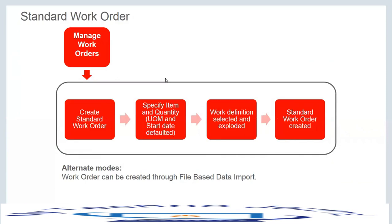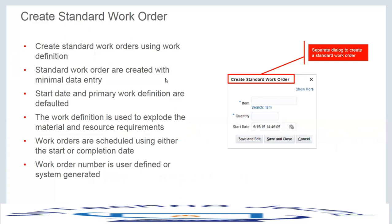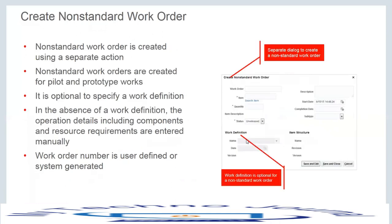To create a work order, you create the header: select the product, provide the quantity, and provide either the start date or the end date. There are two ways to create a work order — through the UI or through the FBDI template. In the UI, you provide the product name, quantity, and a start or completion date, then click Save and Close. Your work order is created.